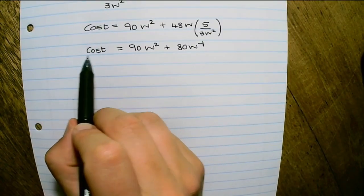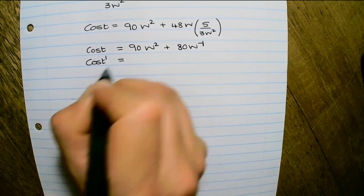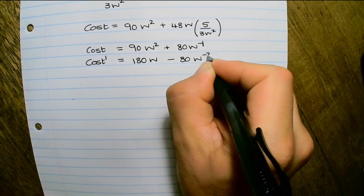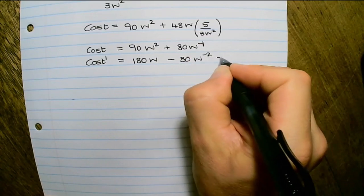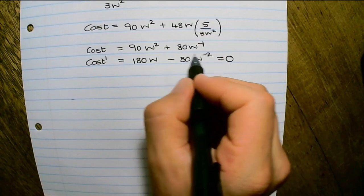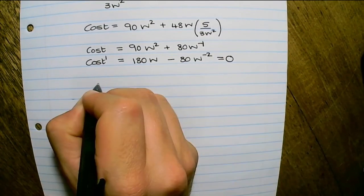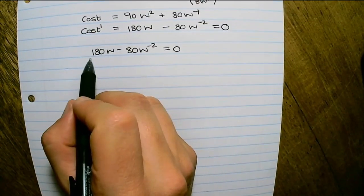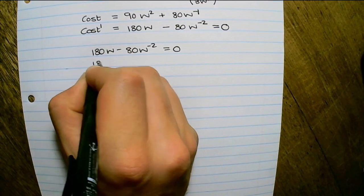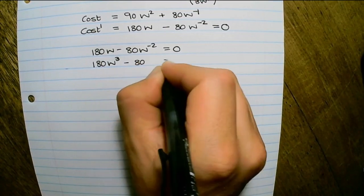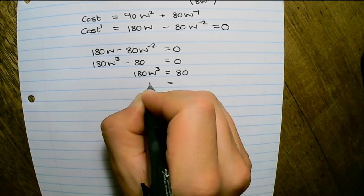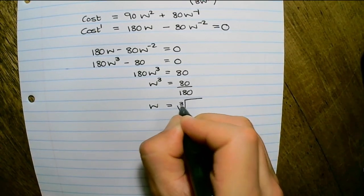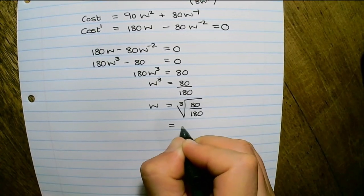Simplifying gives cost = 90w² + 80w⁻¹. To find the width where cost is a minimum, I find the first derivative: dc/dw = 180w − 80w⁻². Setting this equal to zero: 180w − 80w⁻² = 0. Multiplying through by w² gives 180w³ − 80 = 0. Transposing and dividing by 180, then taking the cube root of 80 over 180 gives w equals approximately 0.76 meters.